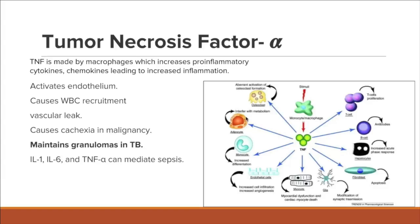TNF-alpha also affects adipocytes, interfering with their metabolism. It affects monocytes, increasing their differentiation, and causes endothelial cells to increase cell infiltration and angiogenesis — the formation of new blood vessels. It also has effects on myocytes in the cardiac muscles, leading to myocardial dysfunction and cardiac myocyte death. It affects glial cells, causing modification of synaptic transmission, and affects fibroblasts, leading to apoptosis.